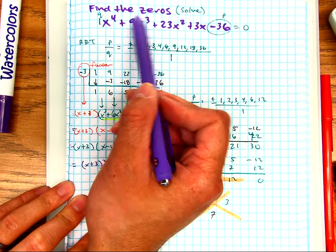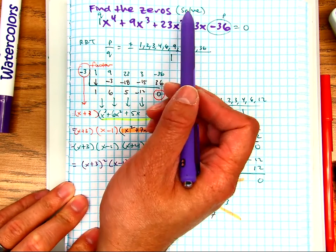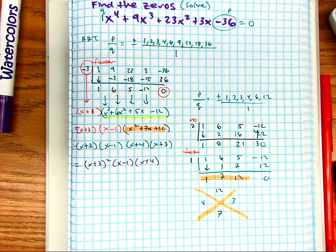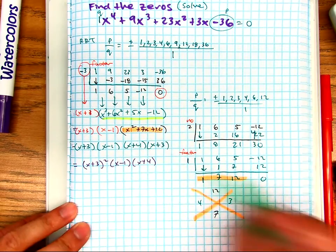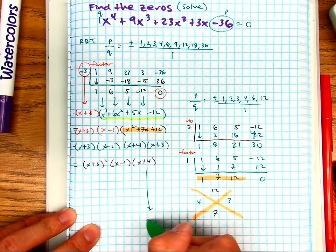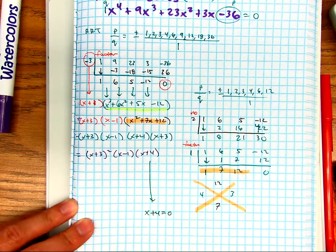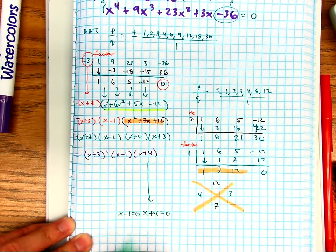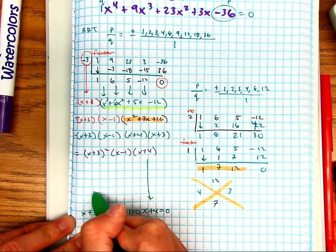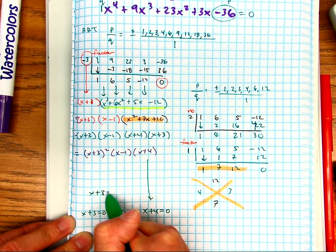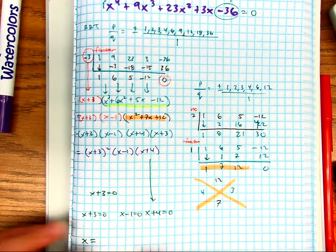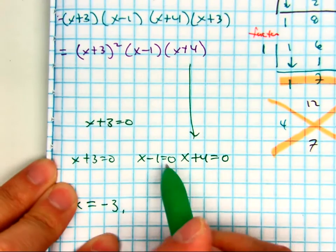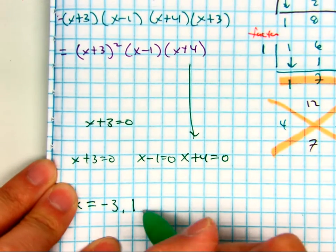So another way of saying find the zeros means solve. Another word for solve you've learned for the past couple of years in secondary math is to get x equals. Do we have x equals numbers? Not yet. So let's do that. I have x plus 4 equals 0. x minus 1 equals 0. Now you can write this twice, or just remember it. And then here we get x equals negative 3, x equals 1, x equals negative 4.